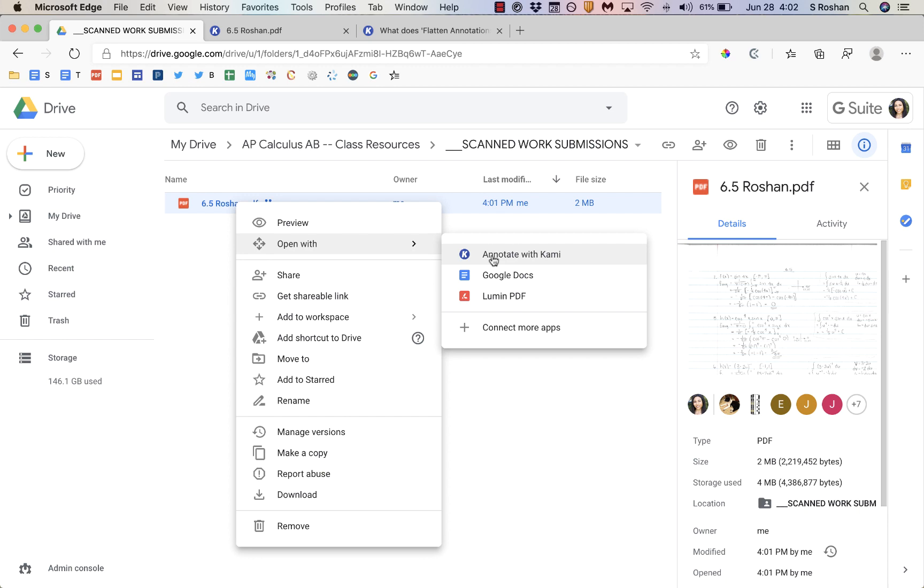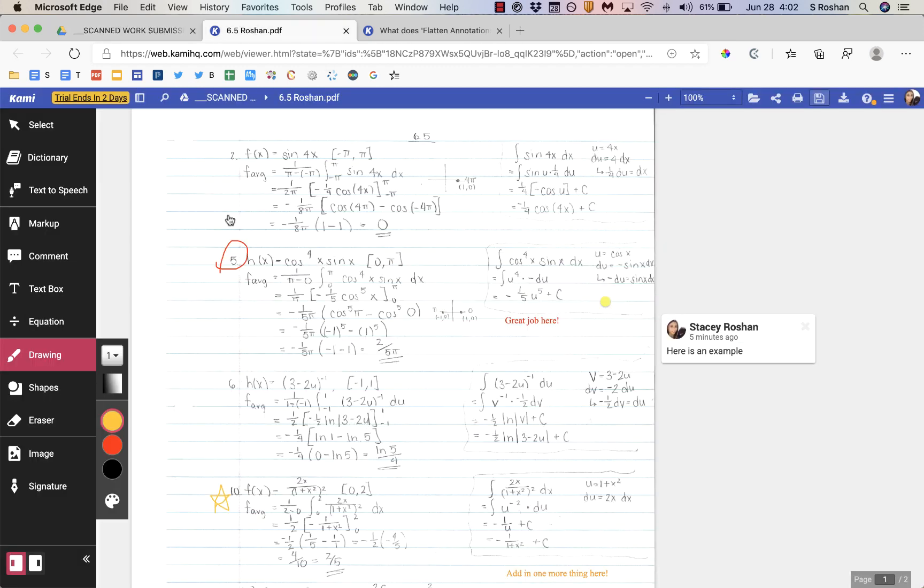It opens it up in Kami just like this, and I can use the drawing tools and the text box tools. And those are the ones that I recommend sticking to.